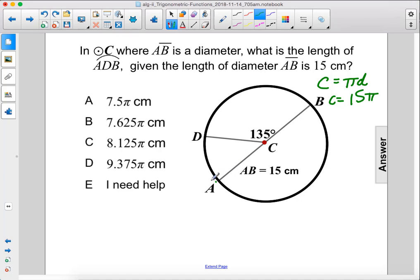Now we're looking for the length of the arc from A all the way to B through the point D, so this arc here. Since this is a diameter, we know that this angle is 180 degrees.